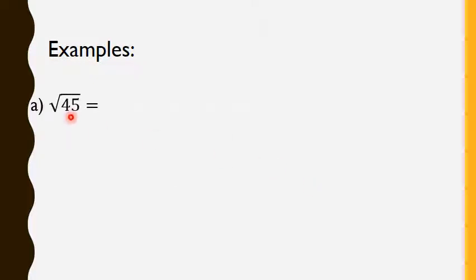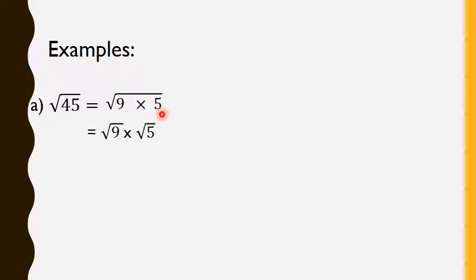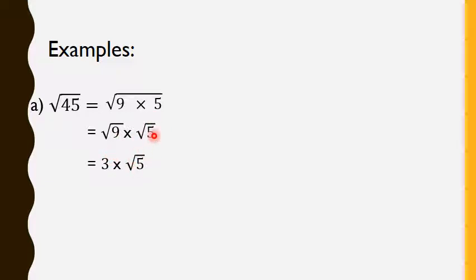Example: radical 45. We know that 45 comes from 9 times 5. So we apply the rule: radical 9 times 5 equals to radical 9 times radical 5. Radical 9 — we know that 9 is 3 squared, so radical 3 squared is 3. And radical 5 we keep as radical 5 because 5 is not a perfect square. So, 3 times radical 5, we write it as 3 radical 5.